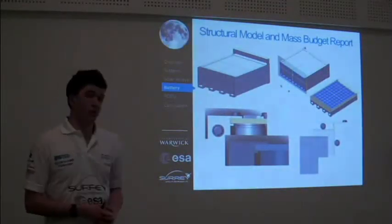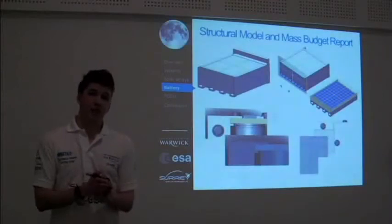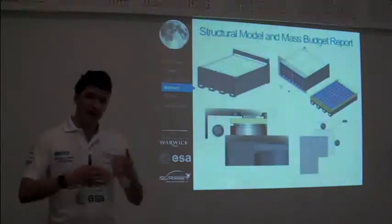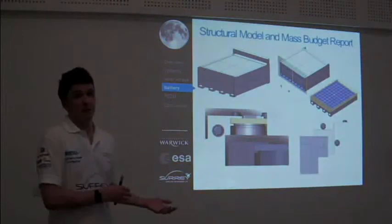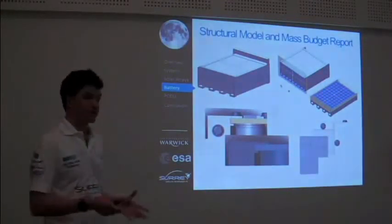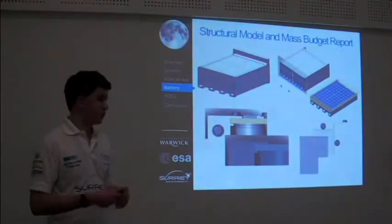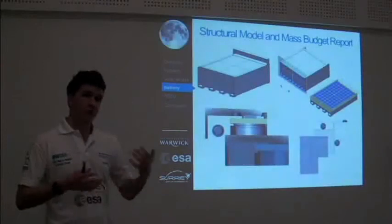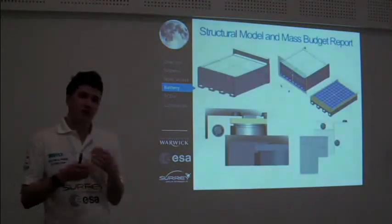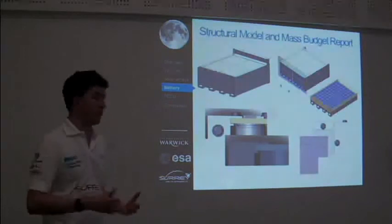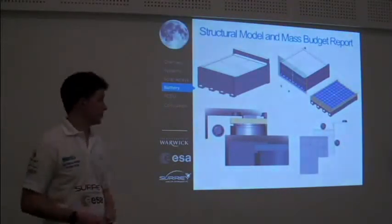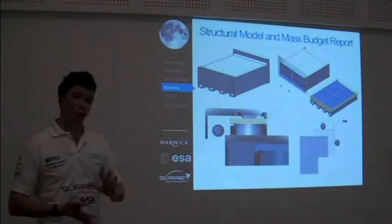After we've made the structural model, we have to compile a mass budget report. This is basically compiling a list of all the items in the full working CAD model, their weights, and then adjusting the densities using the volumes provided by the SOLIDWORKS simulation, so that the structural model has the same overall mass as the actual full working model, which is approximately 4.1 kilograms.